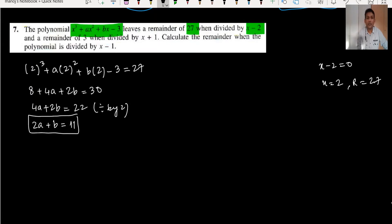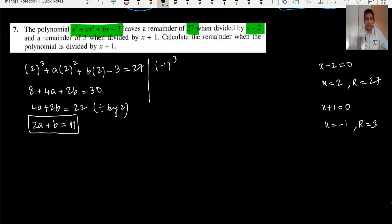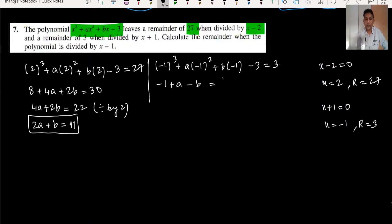For the second condition: the remainder is 3 when divided by x plus 1, so x equals minus 1. Substituting: (minus 1) cubed plus a(minus 1) squared plus b(minus 1) minus 3 equals 3. This gives negative 1 plus a minus b minus 3 equals 3, so a minus b equals 7. This is our second equation.